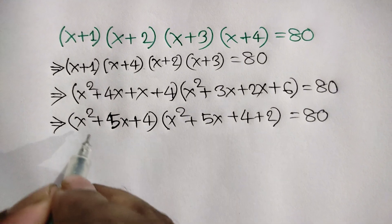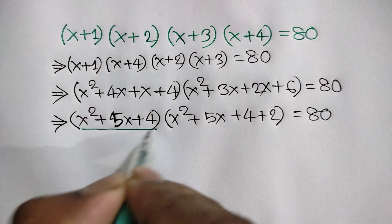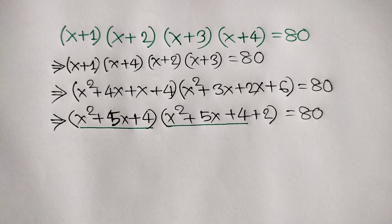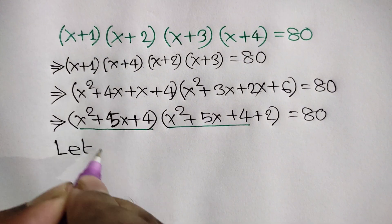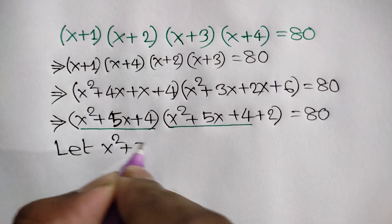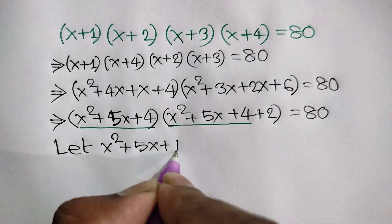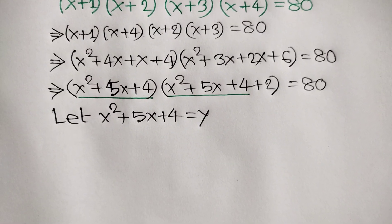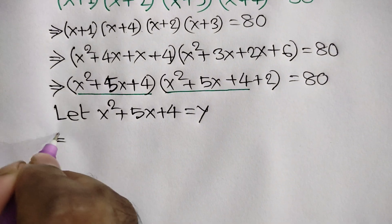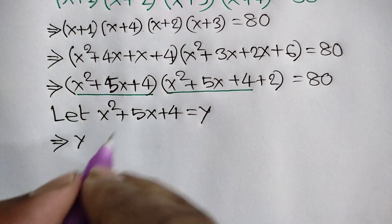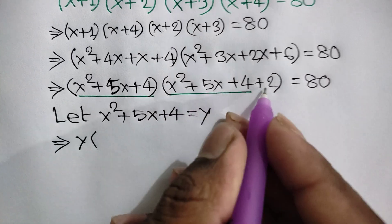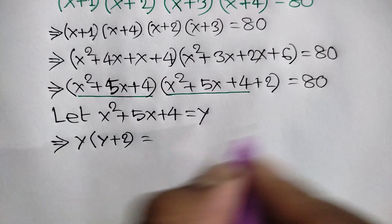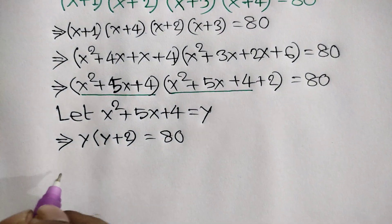Now notice that both expressions contain x² + 5x + 4. Let y equal x² + 5x + 4. Then we can write y times (y + 2) is equal to 80.